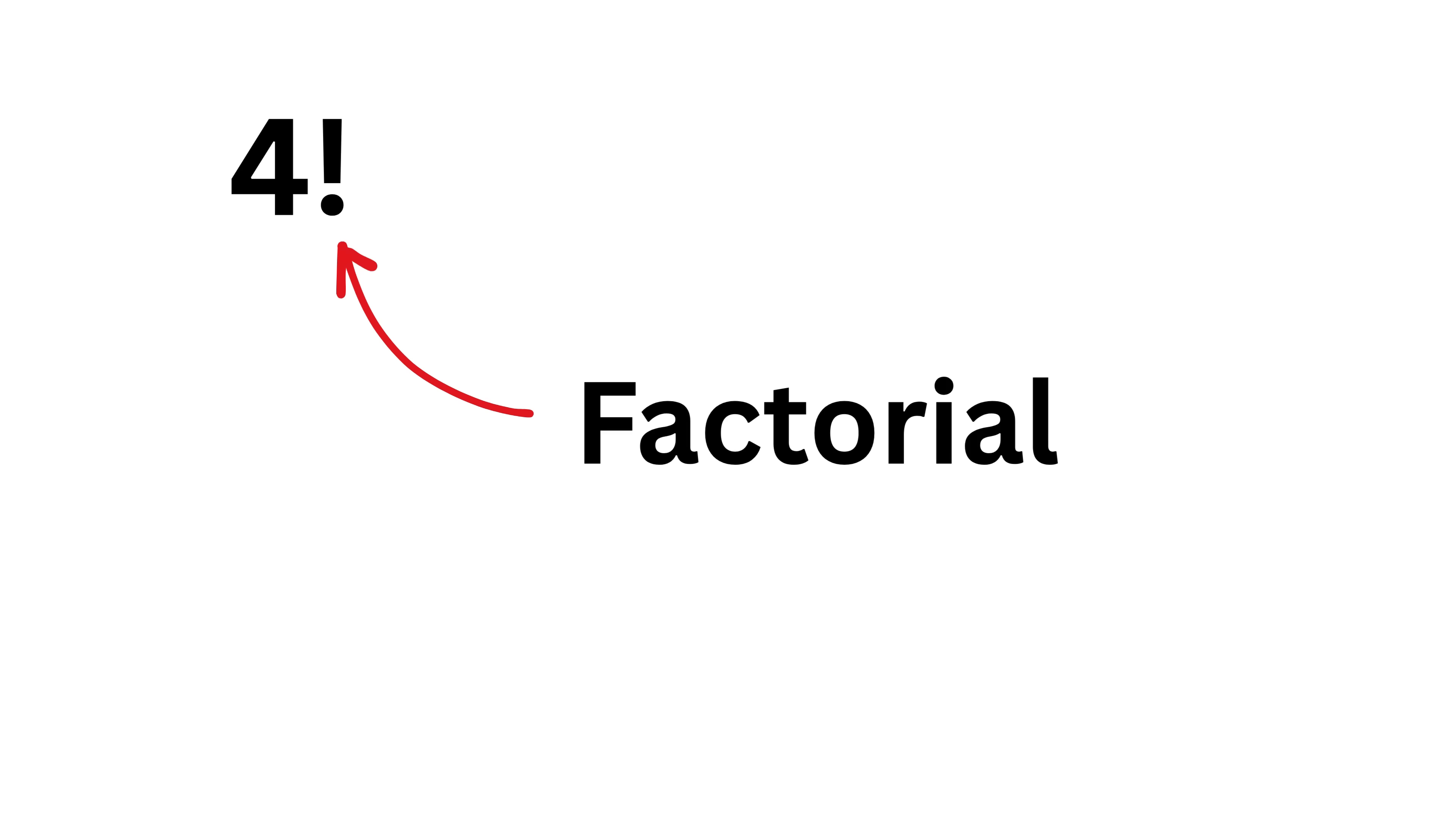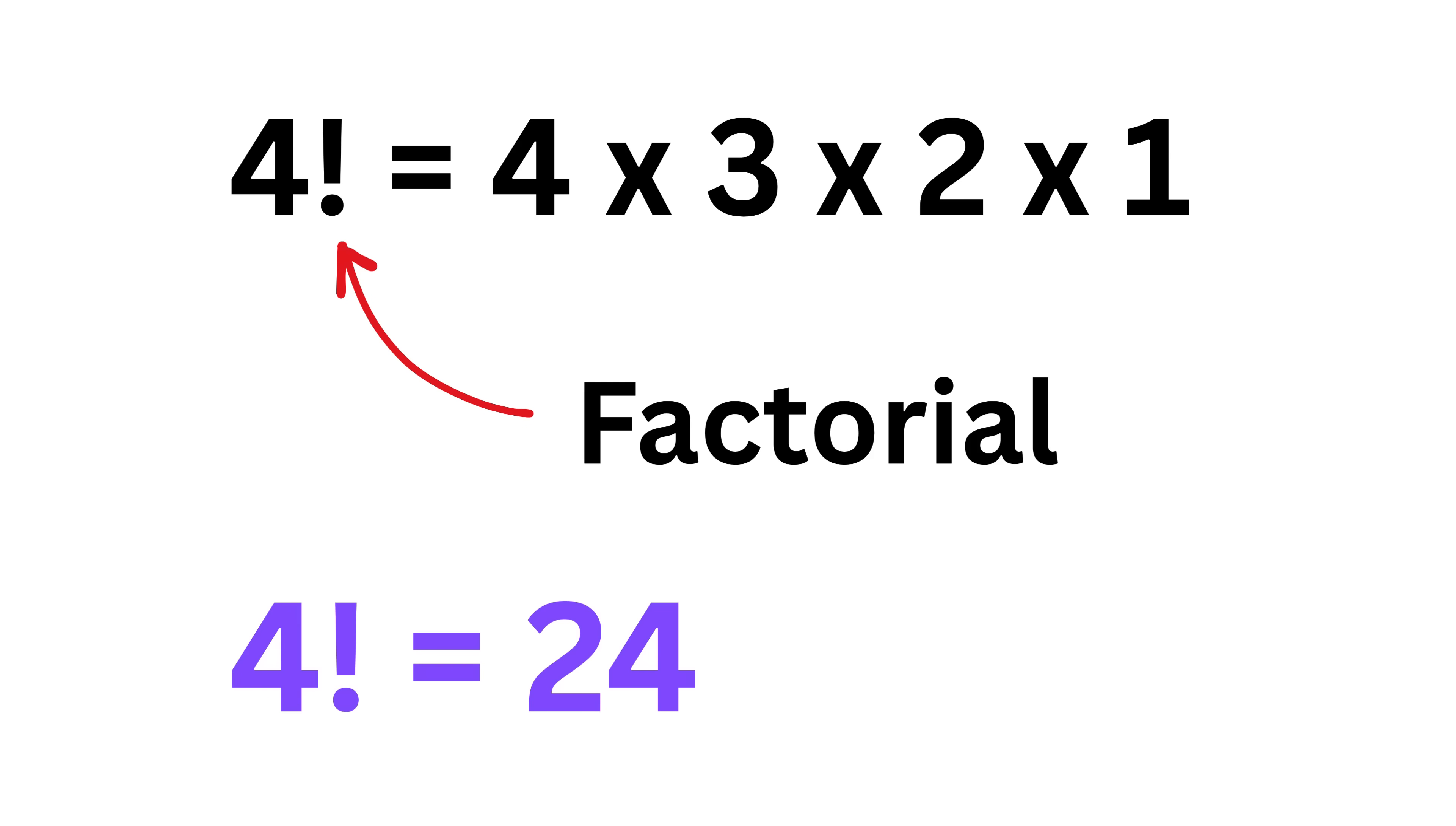This we all know is a standard factorial, where we put an exclamation mark in front of a number. Like 4 factorial equals 4 times 3 times 2 times 1, which equals 24. And any n factorial equals n times n minus 1 and so on, times 2 times 1.